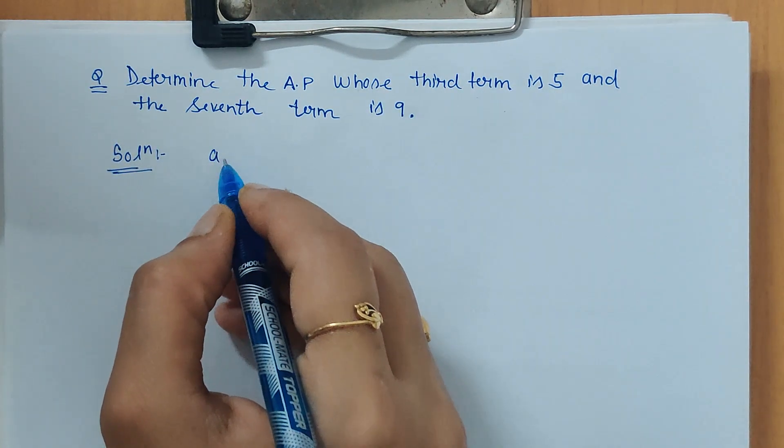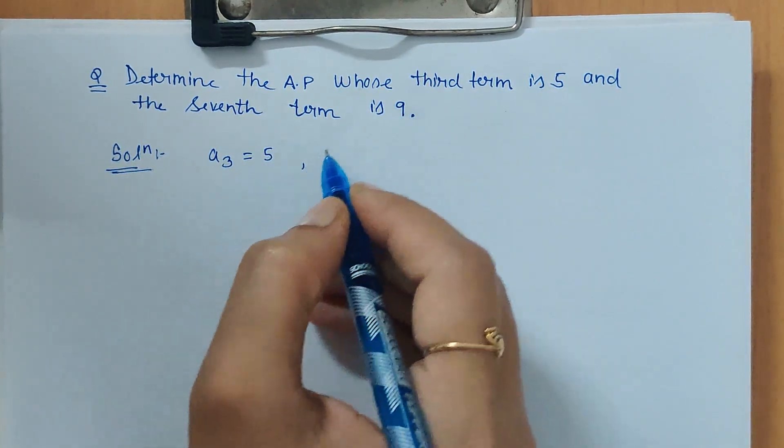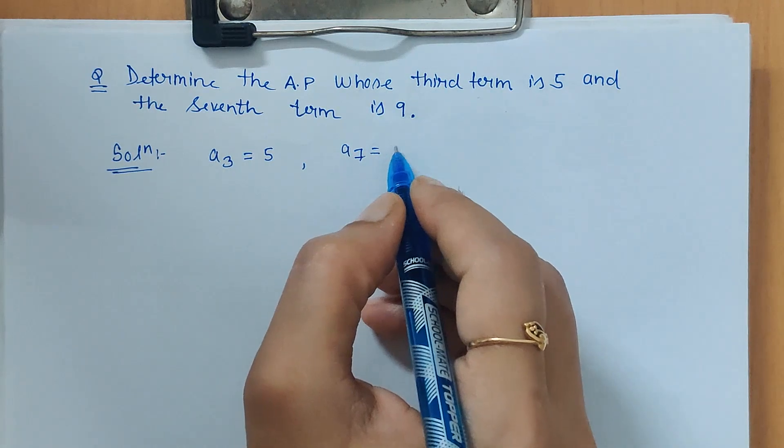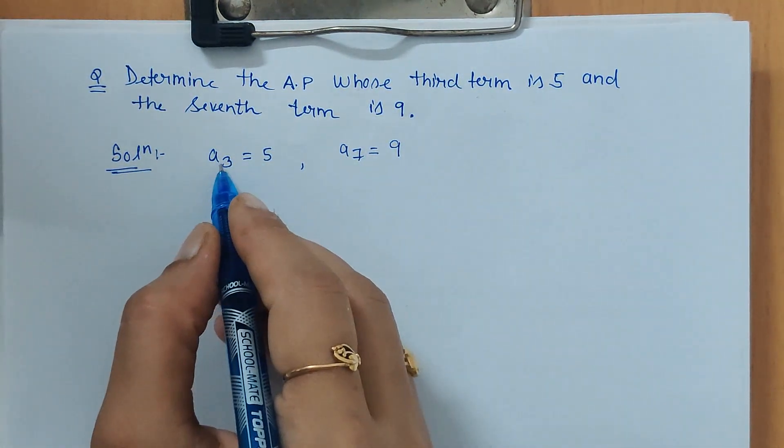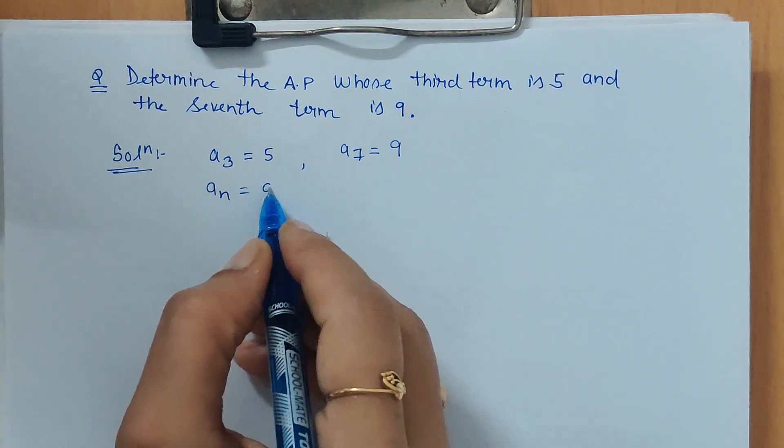The third term, a3, is given as 5. The seventh term, a7, is given as 9. Let's write whatever is given first. We know that an is equal to a plus (n minus 1) times d. This is the formula.